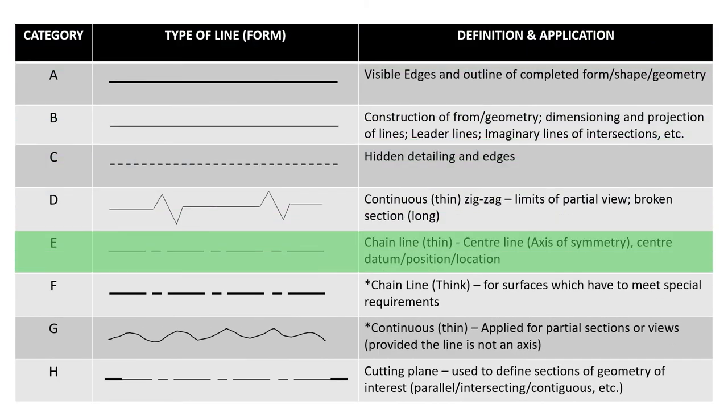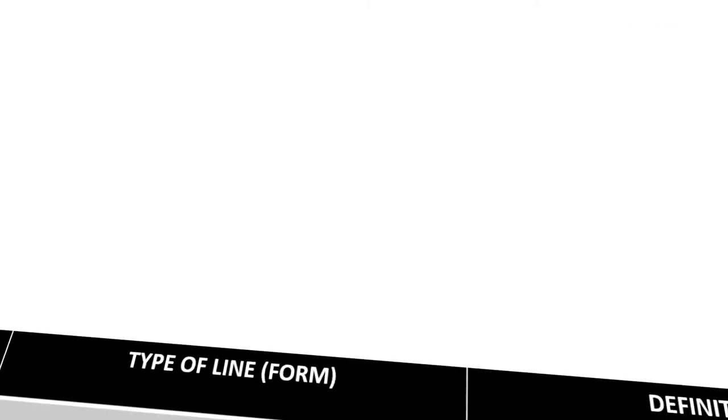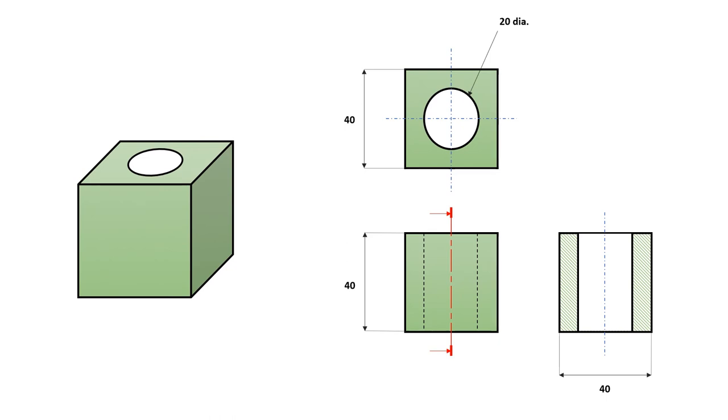Let's look at category E. Category E is not necessarily a hidden detail, we normally call this a chain line. The chain line is thin, and you normally use this to represent symmetry in geometric forms, so center lines, datum points, position, bearing, location. This is typically the line that will be used, so that is category E.